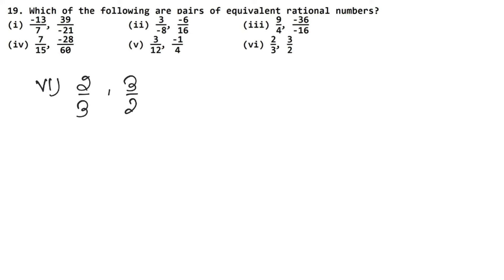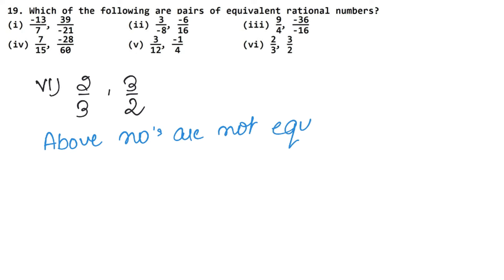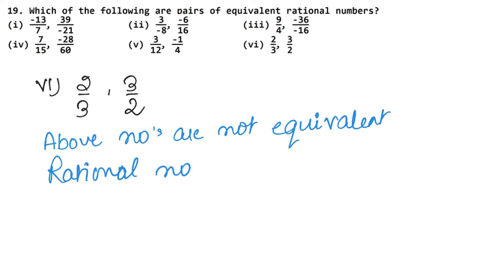Let's do the last part now. The last part is 2 upon 3 and 3 upon 2. These are not equivalent rational numbers — their values are clearly different. The above numbers are not equivalent rational numbers.